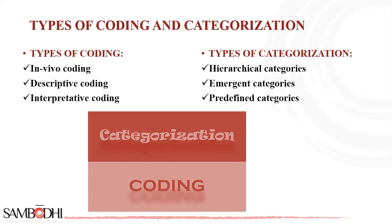After coding the data, researchers review the codes to identify patterns and connections. They group similar codes together to form categories, ensuring that each code fits coherently within a single category. Coding and categorization are iterative processes, meaning researchers may revisit and redefine the codes and categories as they progress in their data analysis. These processes facilitate the systematic exploration of data, leading to a deeper understanding of the research questions and generating valuable insights and themes for further interpretation and reporting.